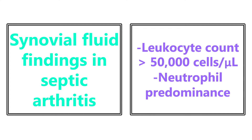Synovial fluid findings in septic arthritis — high yield for the exam and clinical practice. You're going to see a leukocyte count of greater than 50,000 cells per microliter, as well as a neutrophil predominance. You can have septic arthritis with a count less than 50,000, but that's the magic number used on exams and for regular diagnosis.